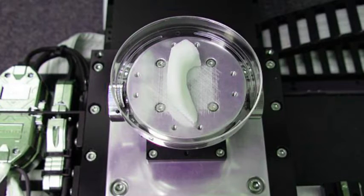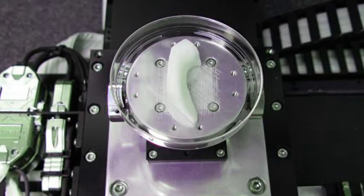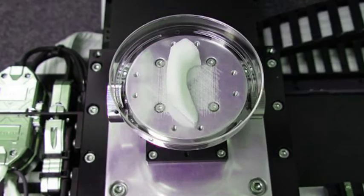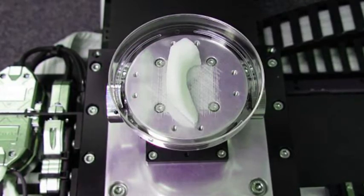Anthony Atala and colleagues at WFBMC solved this problem by printing cells together with biodegradable polymer materials that make the structures stronger until the newly forming tissue matures.